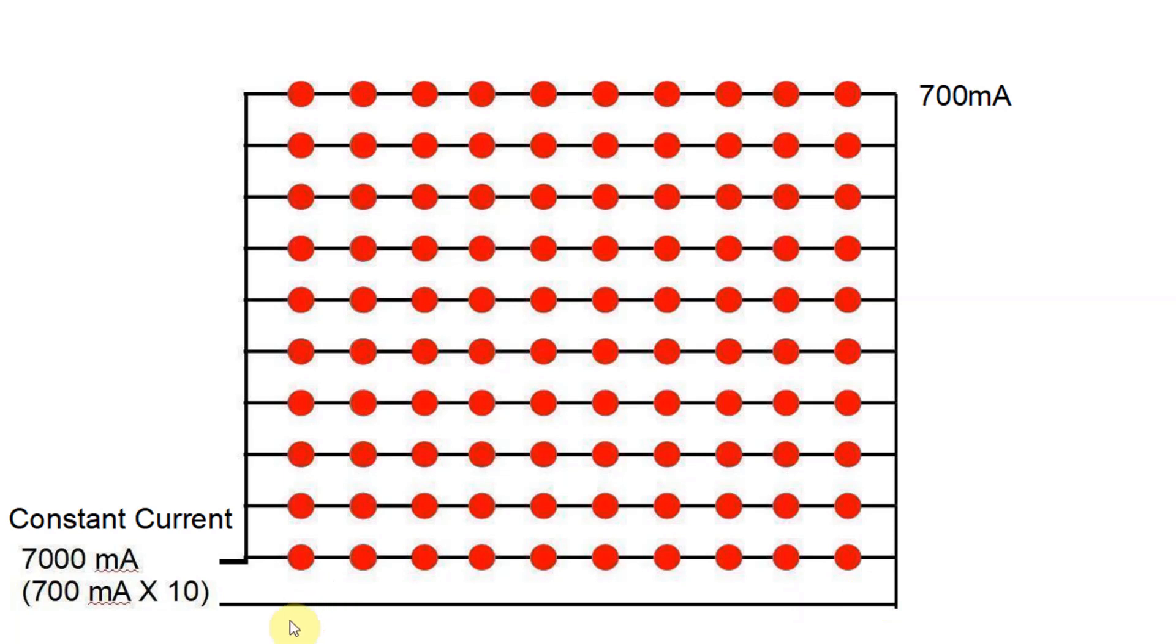We'll stay with constant current power supply here. We've got a constant current power supply and it's putting out 7000 milliamps. So that's 700 milliamps for each of these series strings of LEDs. Everything's good.